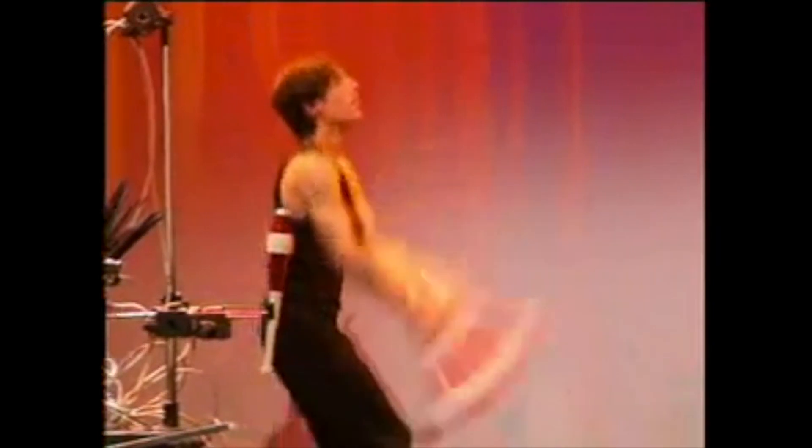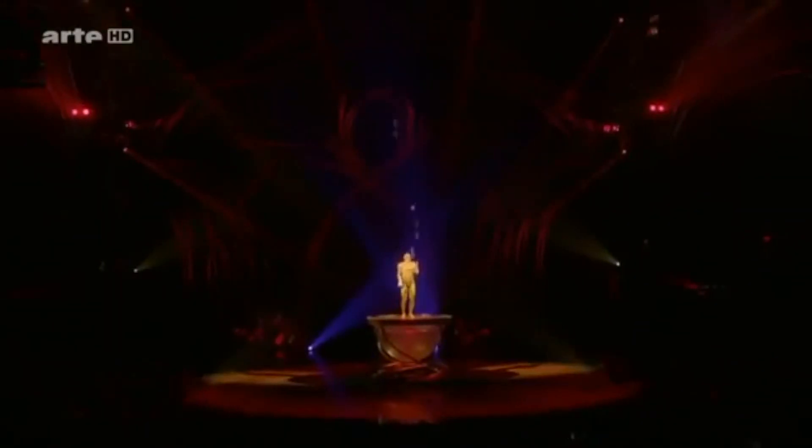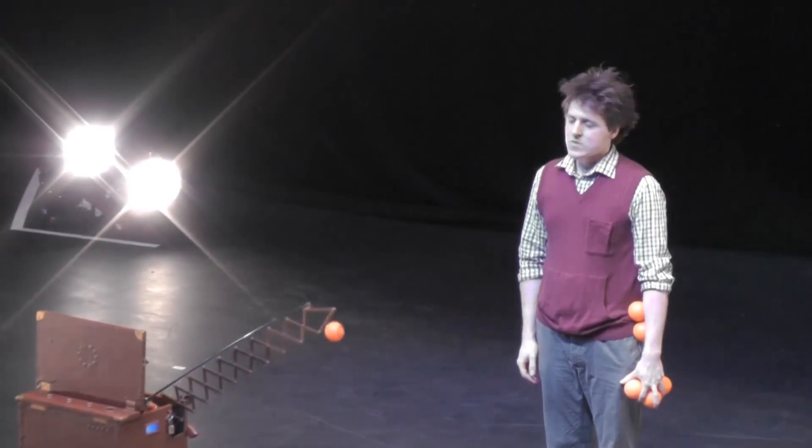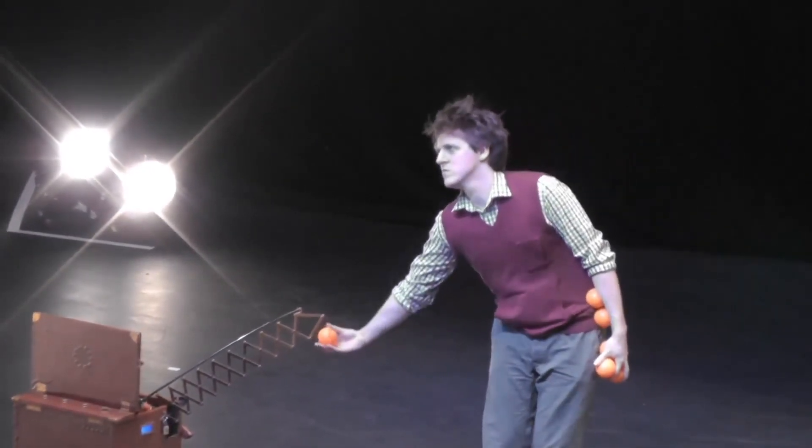The most common juggling machine you'll see on stage is the mechanical prop stand. When the juggler wants a prop, the machine throws, drops, launches, or holds out a prop for the juggler to catch, or take, and then juggle.